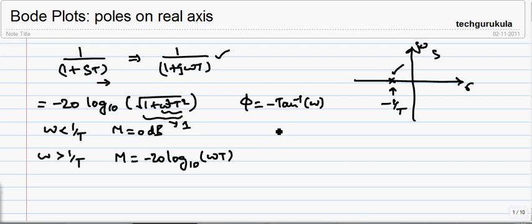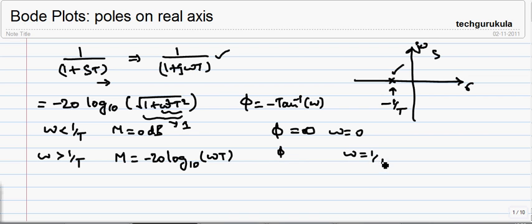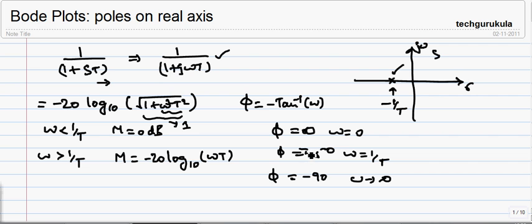For phase angle: when omega equals 0, phi will be 0. When omega is very small, it will be nearly equal to 0. When omega equals 1 by T, phi will be minus 45 degrees. As omega tends to infinity, phi equals minus 90 degrees.